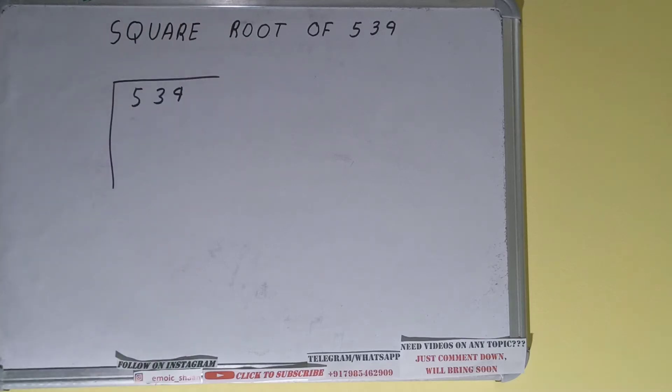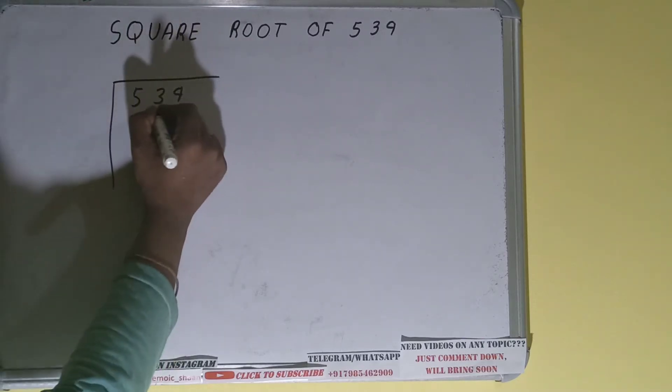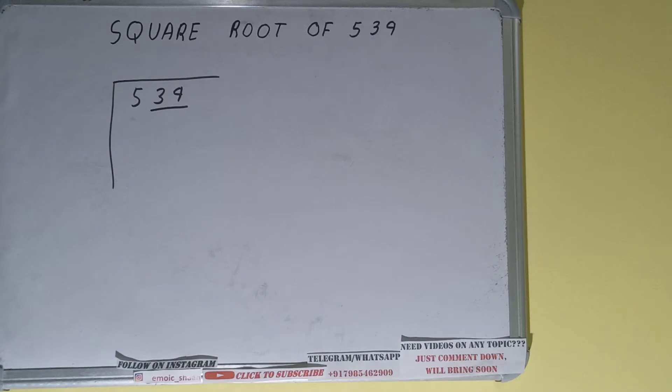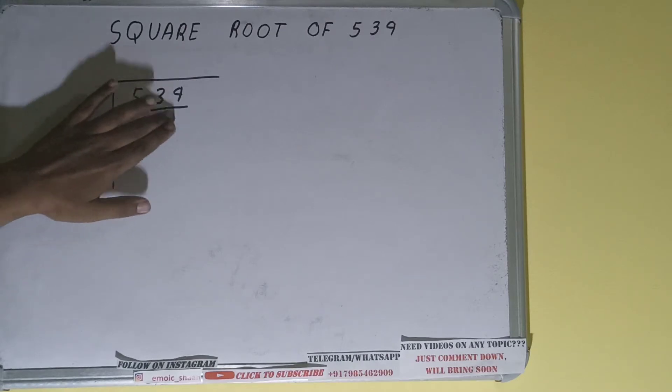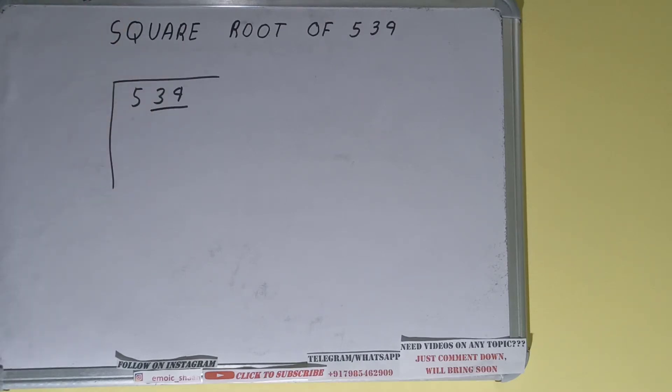...is we need to form pairs from the right hand side. So only one pair can be formed and this five will be left out. So first we'll divide this five and then we'll bring down the pair. The rule...